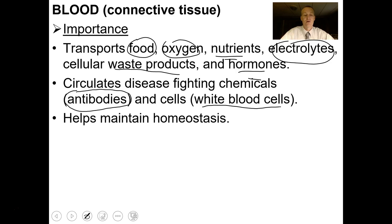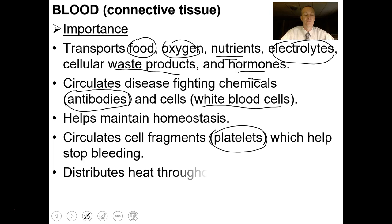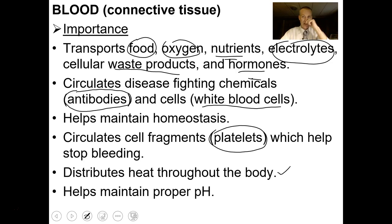Another main job of the blood is to circulate cell fragments called platelets. Platelets help you stop bleeding if you ever get a cut — they'll plug up a hole in a blood vessel. If you have too many platelets, that can cause blood clots that block or impede the flow of blood. Blood also distributes heat through the body and helps maintain proper pH.